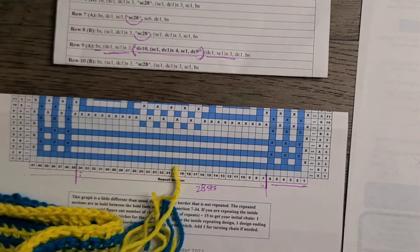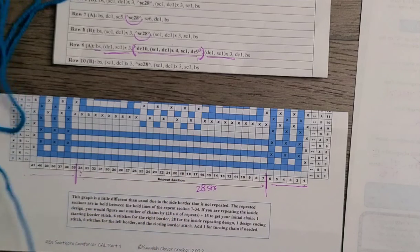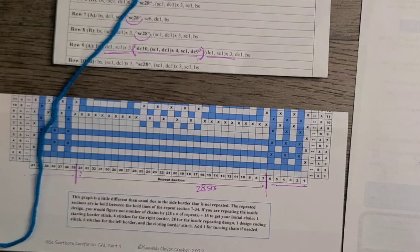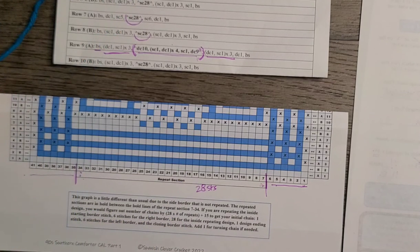Our color B yarn. So the B is, color B is for the design area, so in this row we're actually working on the design not the background.